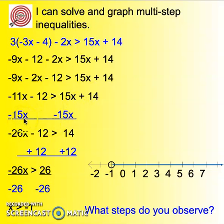I noticed there's inverse operations going on to get the variable by itself to isolate it and then I noticed that the graph actually looks very similar to how we've already graphed for one step inequalities.